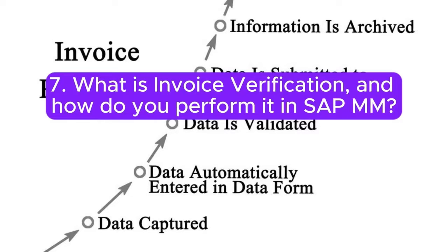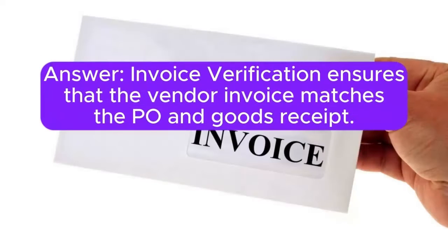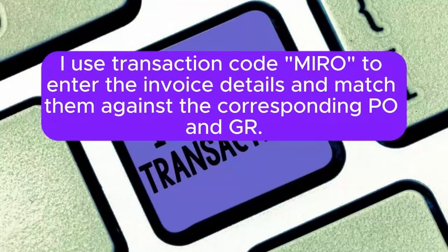Question 7: What is invoice verification and how do you perform it in SAP MM? Answer: Invoice verification ensures that the vendor invoice matches the PO and goods receipt. I use transaction code MIRO to enter the invoice details and match them against the corresponding PO and GR.